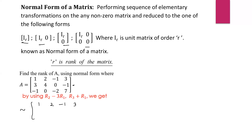For row 2, we multiply 3 throughout the first row: 1, 2, minus 1. Then: minus 1 minus 2 gives 0; minus minus gives plus 3; minus 1 and multiplied by 3 gives 9, so minus 1 minus 9 equals minus 10. For row 3, obtained by addition of the third and first rows: minus 1 plus 1 is 0; 0 plus 2 is 2; minus 1 and minus 1 gives minus 3; 7 plus 3 gives 10.